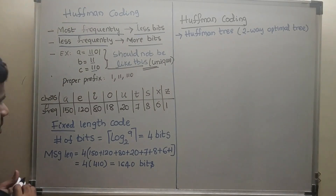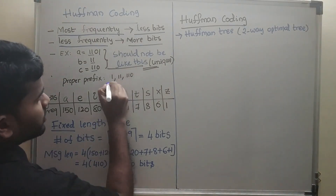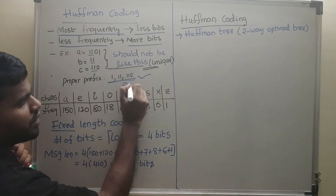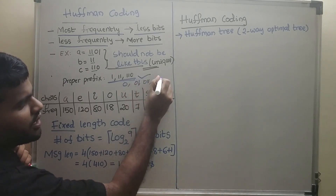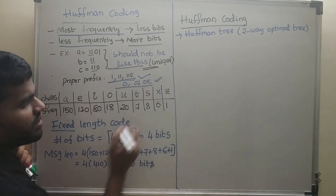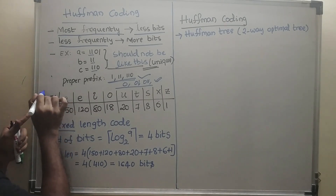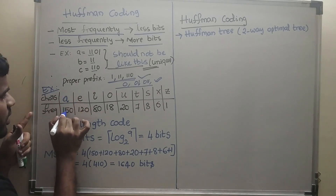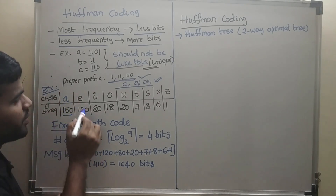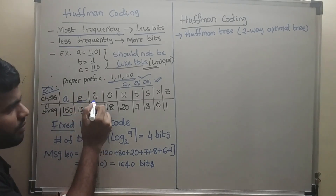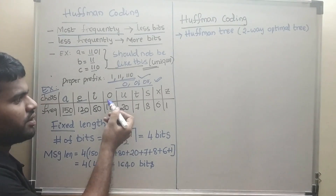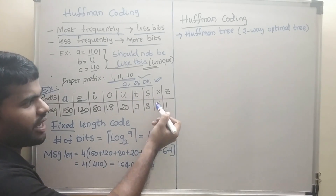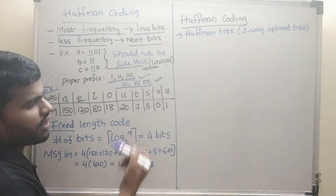The proper prefix code could be something like '110', '0', '01', '011' — it should be a proper prefix code. For example, A occurred 150 times, E occurred 120 times, I occurred 80 times, O occurred 18 times, U occurred 20 times, T occurred 7 times, S occurred 8 times, X occurred 6 times, and Z occurred 1 time.